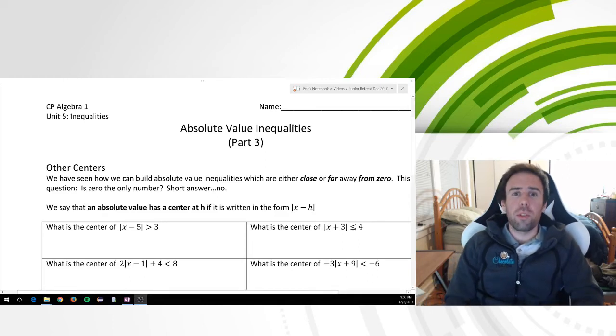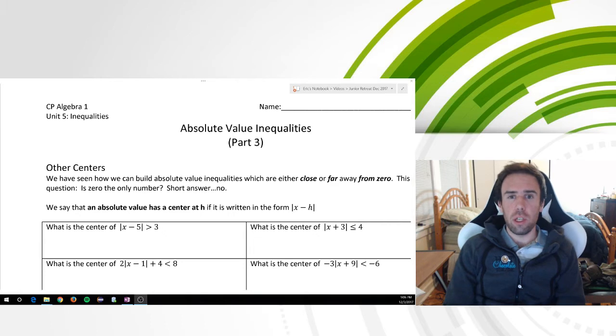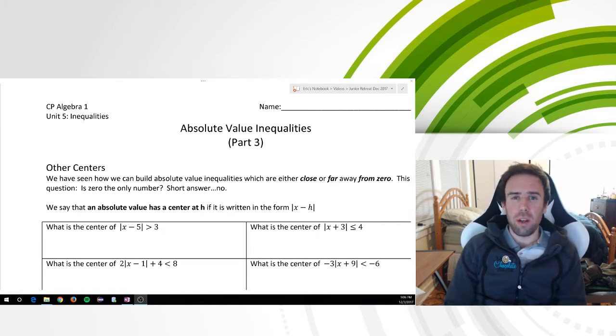Hello and welcome. This is going to be our part 3 video on absolute value inequalities. In the previous two videos, you'll notice the absolute value was always centered around 0. That's actually not always the case. If we want to move the absolute value from the center at 0, that means that we need to put numbers inside the absolute value. So let's take a look at how that works.